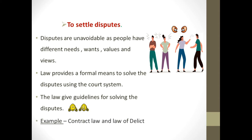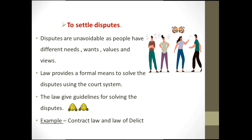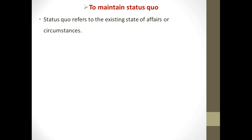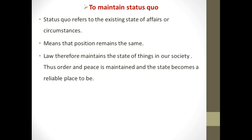For example, contract law regulates the disputes between people who have signed any document. The fifth purpose is that law maintains the status quo in the society. Status quo refers to the existing state of affairs or circumstances — meaning the position remains the same, circumstances remain the same, everything is normal in our community, such that things do not change rapidly and everything can be predictable. Law therefore maintains that state in our community, so order and peace is maintained and the state becomes a reliable place to be.